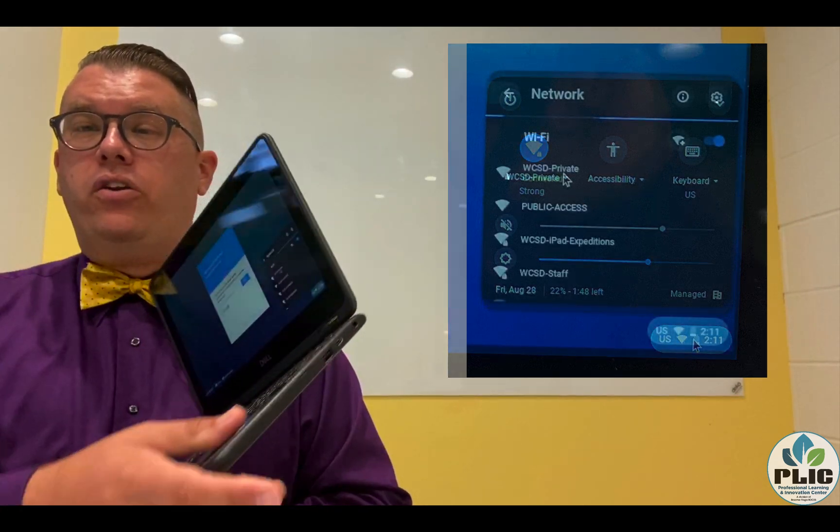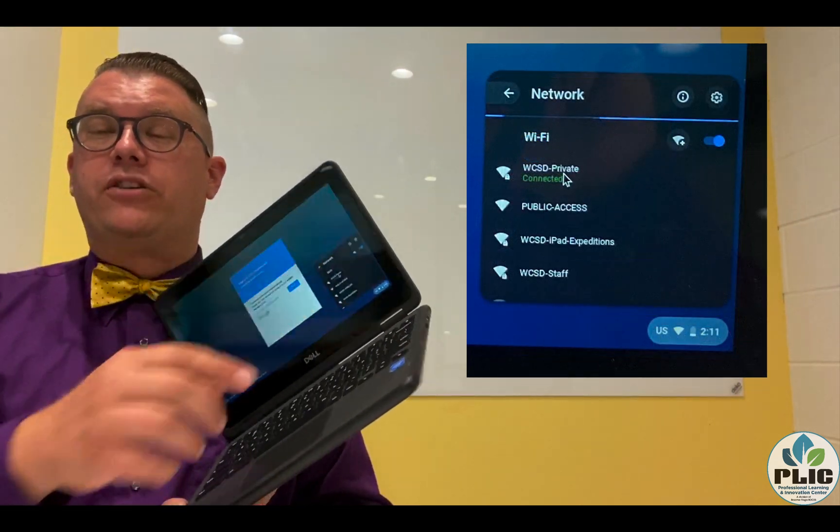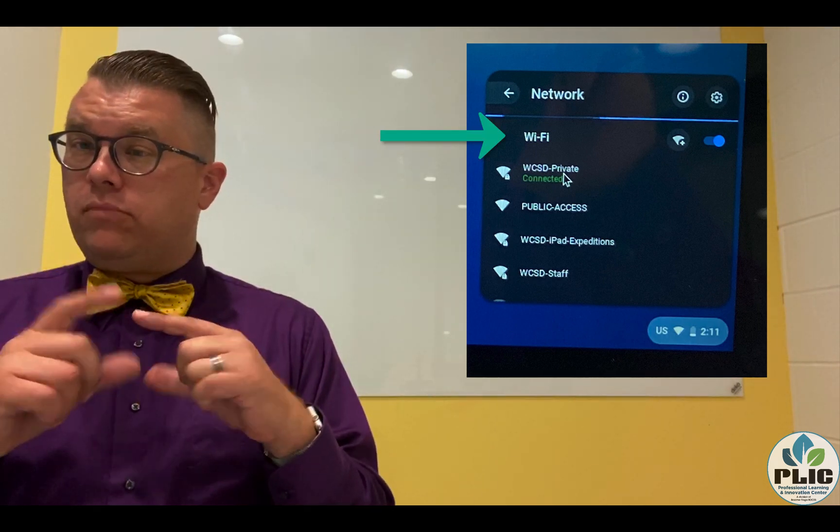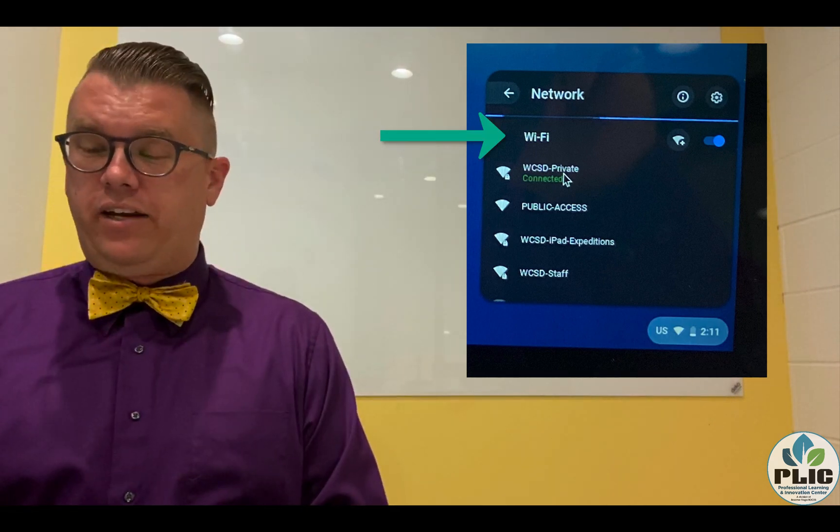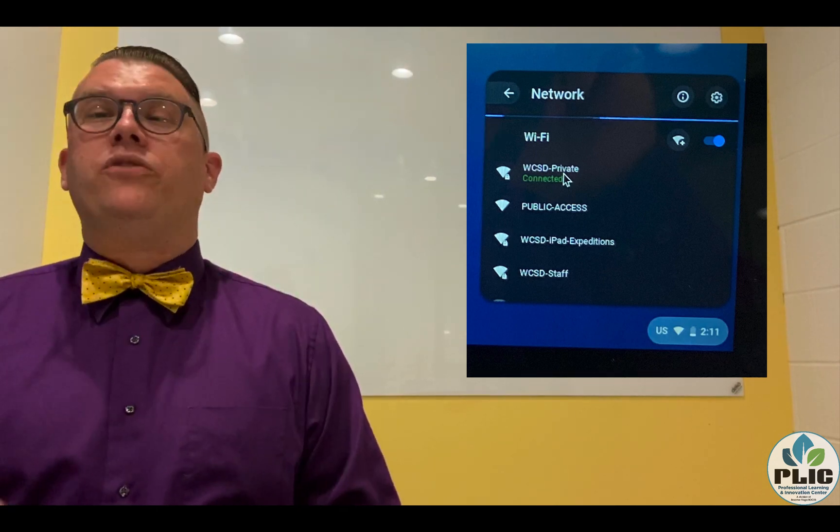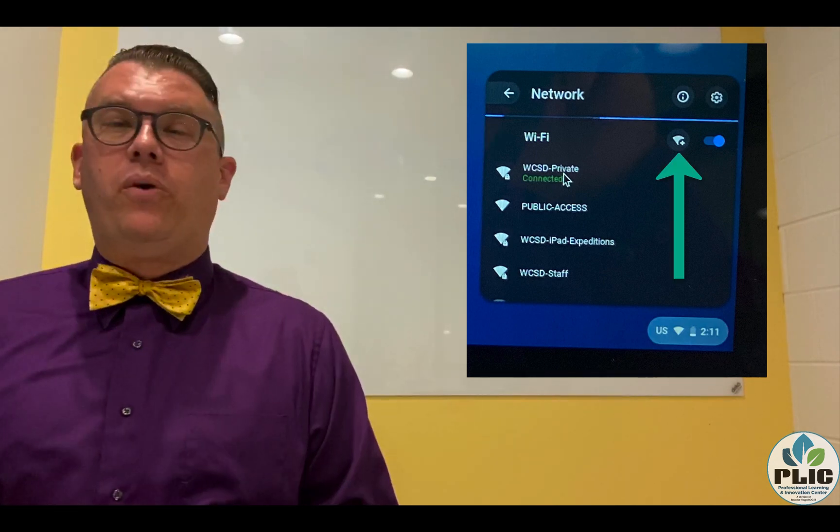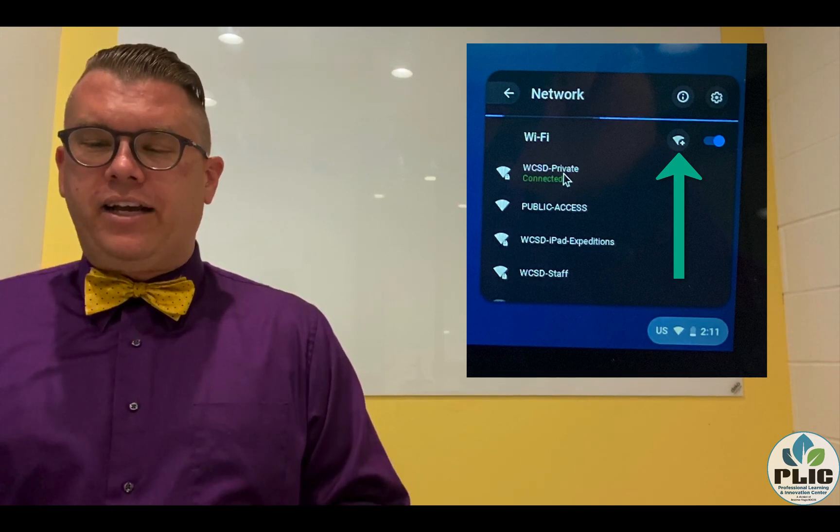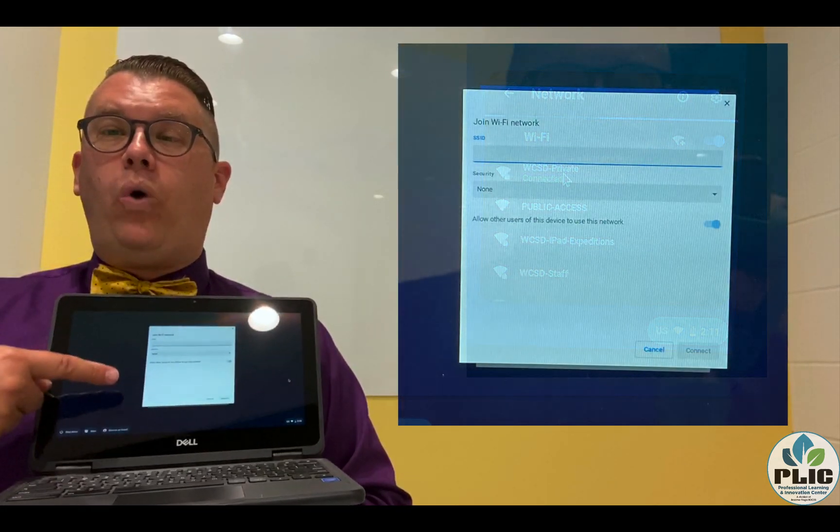A new little section that says Network. It says Wi-Fi, and there's a little wedge with a plus - that's the one where I can add a new network. When I click on that, it brings up this white window that says Join Wi-Fi.